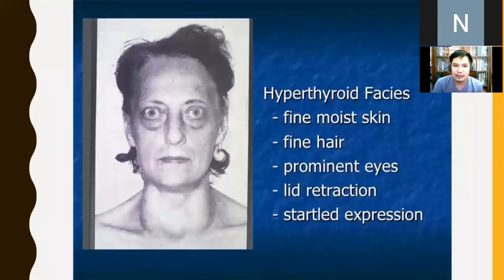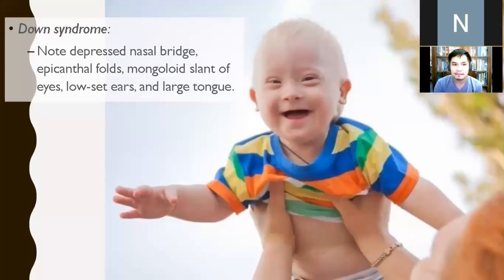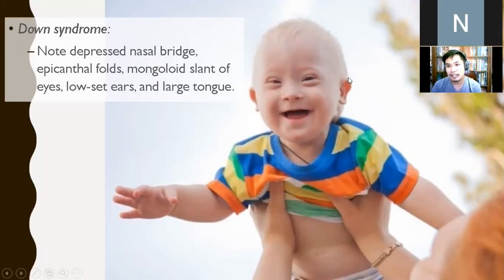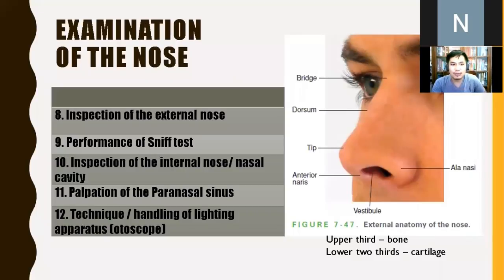In hyperthyroidism there is a startled expression. Down syndrome features include a depressed nasal bridge, and almost all patients with Down syndrome share the same facial characteristics — including low-set ears, where the superior portion of the ear is lower than the level of the lateral canthus — and a large tongue.